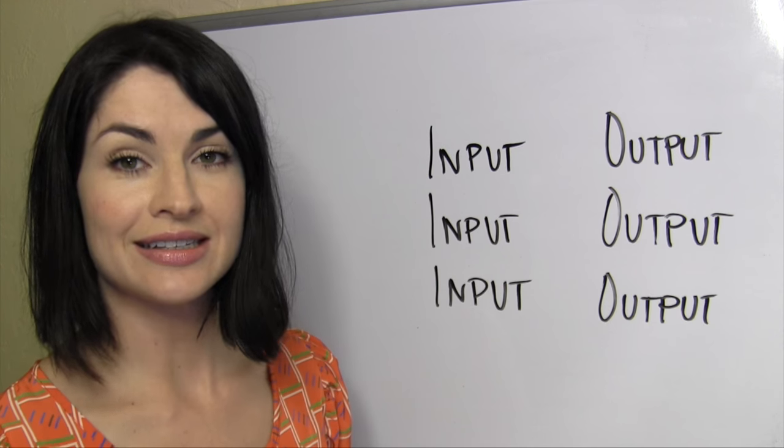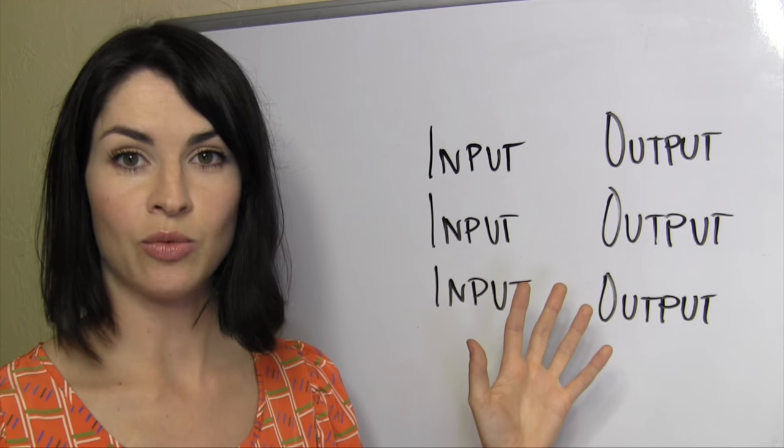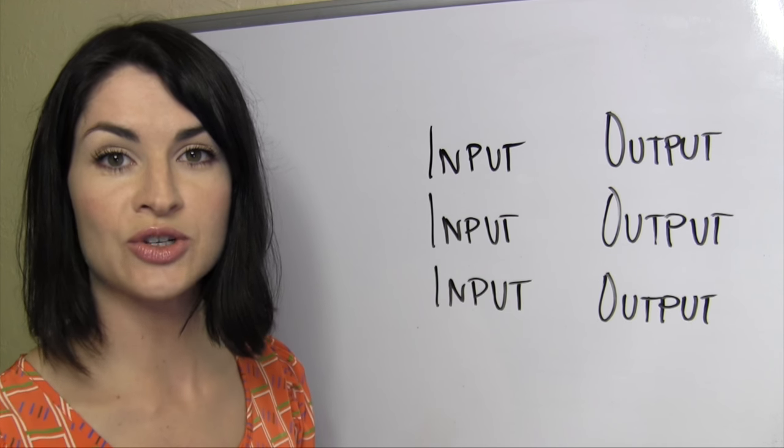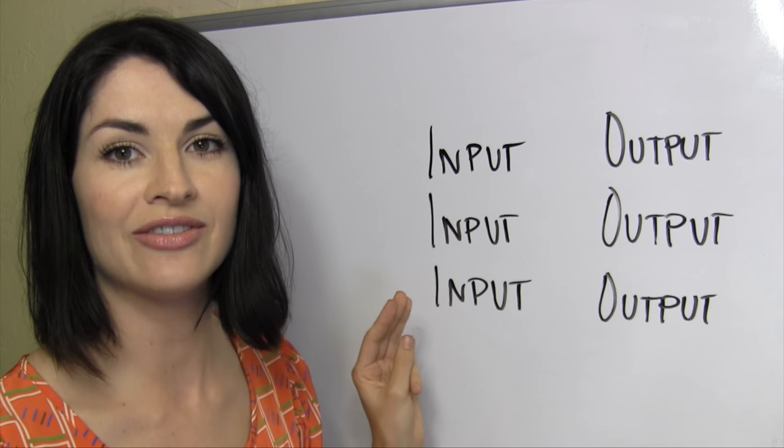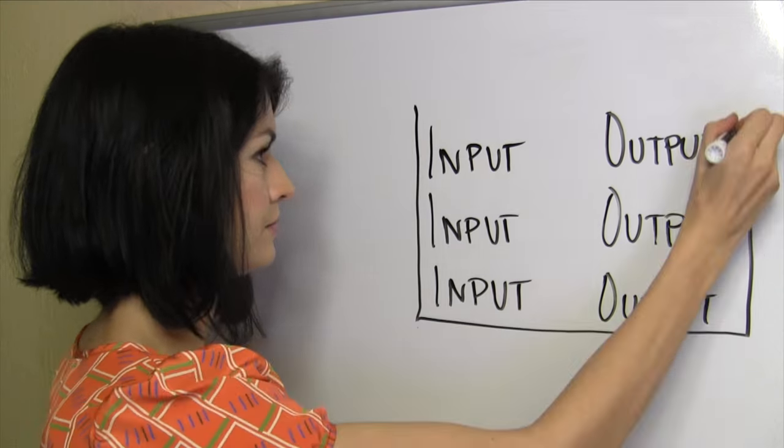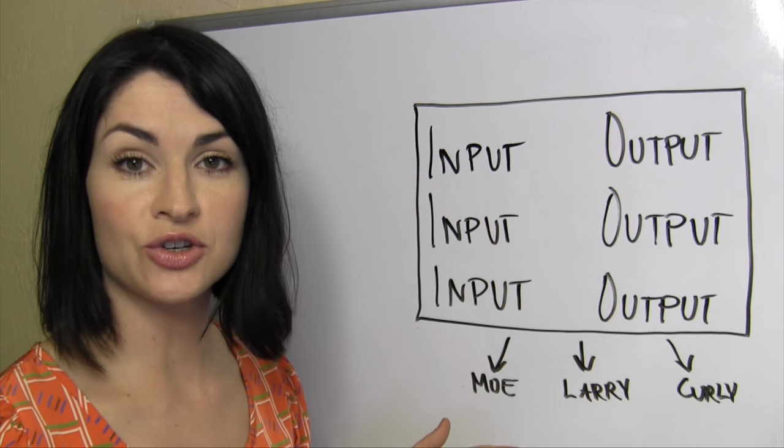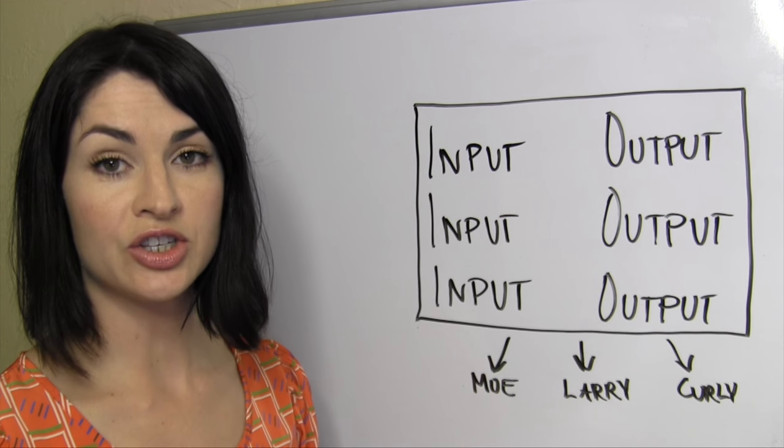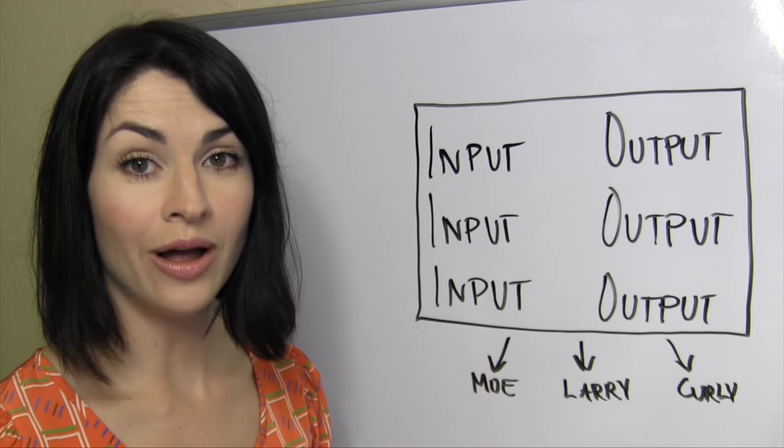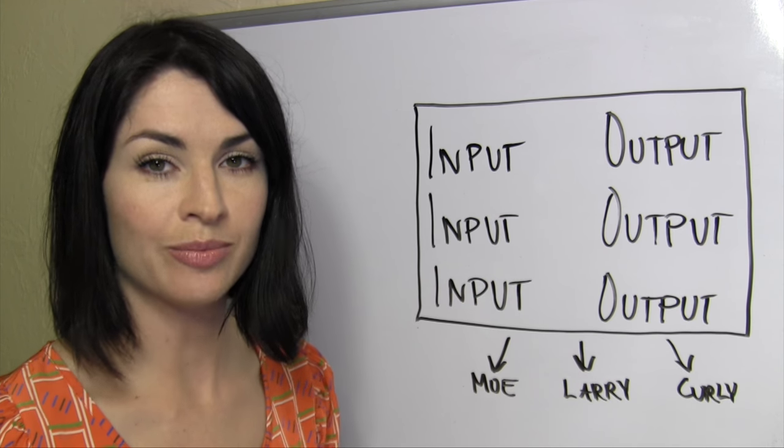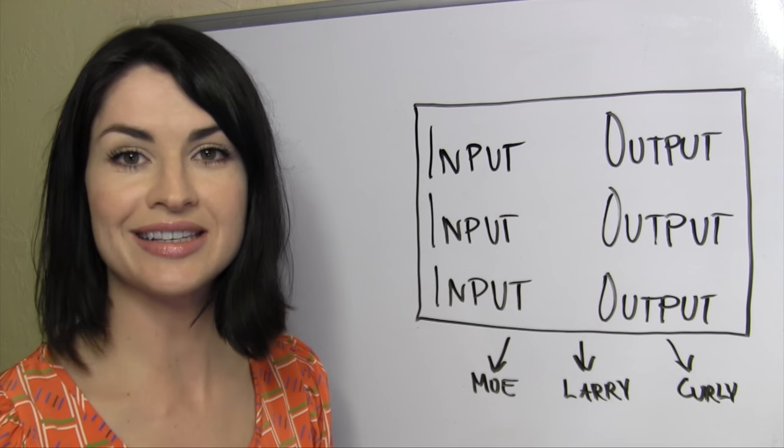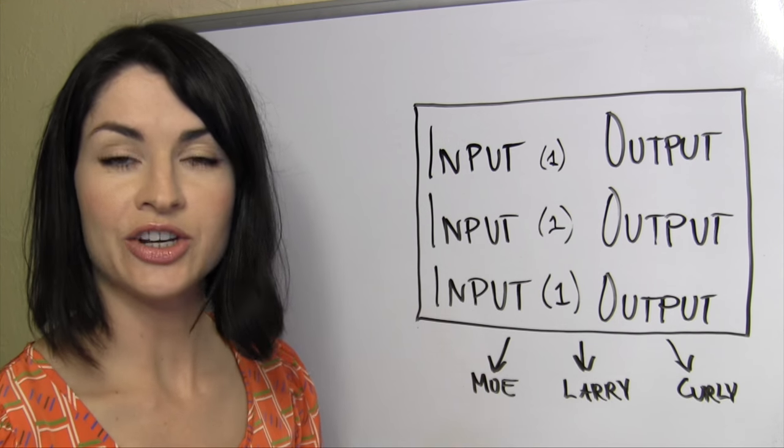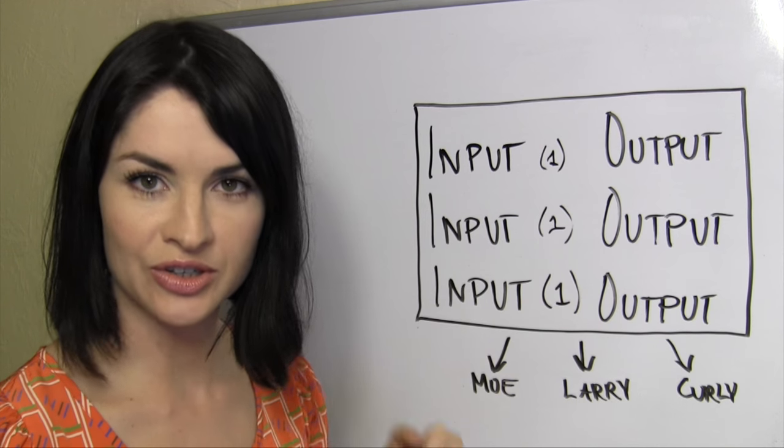But the masternode doesn't send this transaction out to the network as a real thing just yet. Why? Because the wallets need to check that the masternode has done this correctly and is behaving honestly. So the masternode sends this transaction just to those three wallets. And those three wallets check for two things. One, that the output dash equals the input dash, meaning the masternode isn't trying to steal some of the dash for itself. One dash, one dash, one dash, yes. Outputs equal inputs, good.